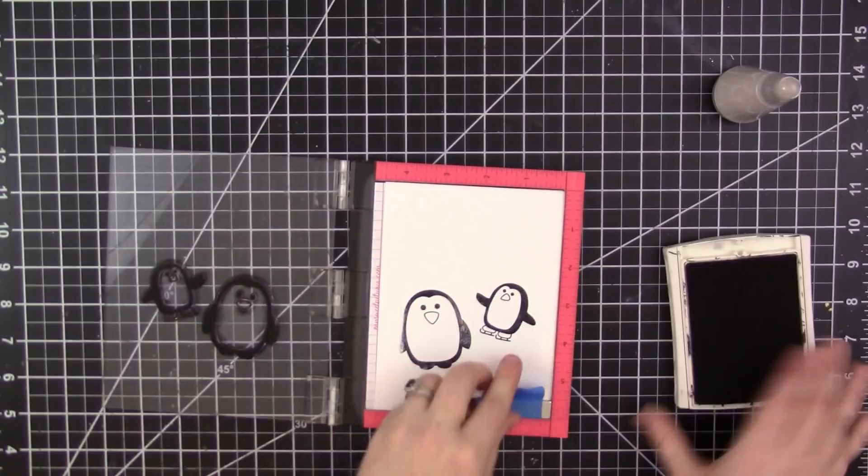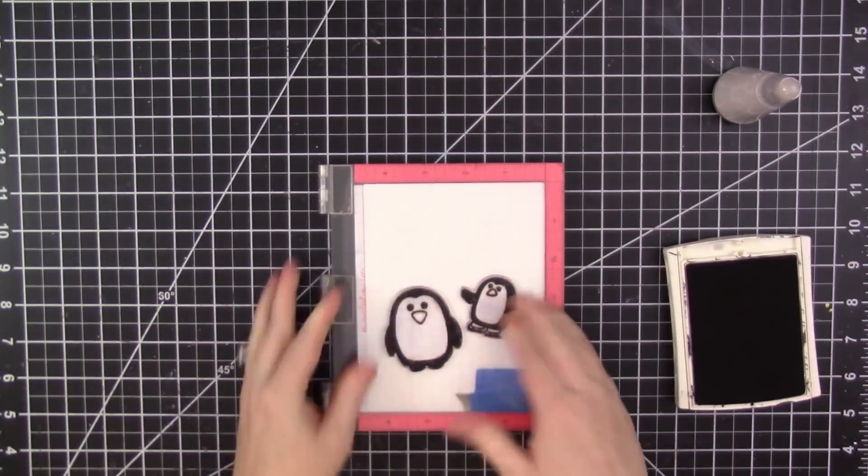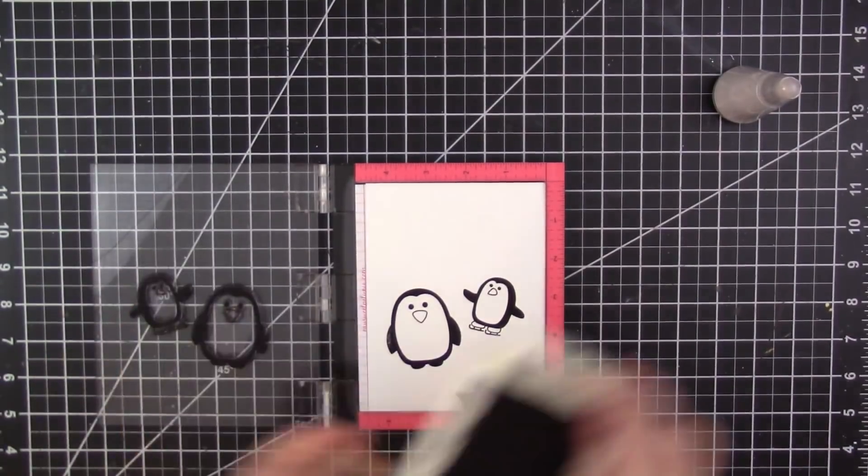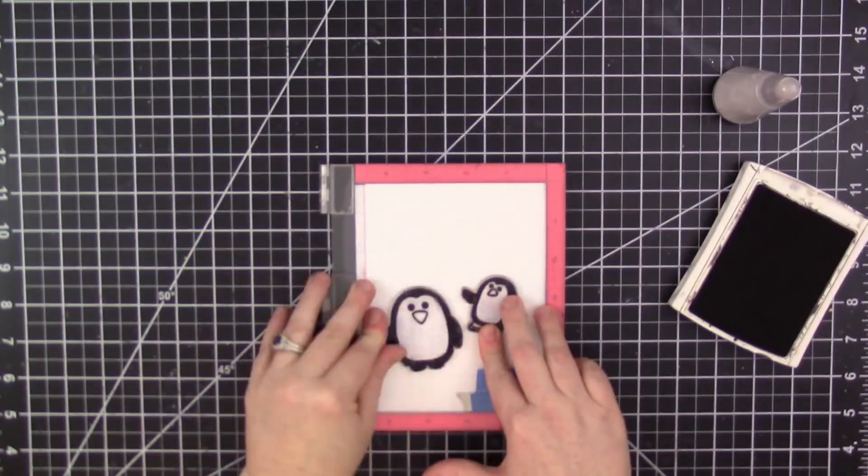So that I can stamp the images multiple times and then I get a really nice solid black image. I'm stamping with Stampin' Up archival black ink.